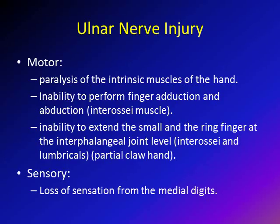Regarding ulnar nerve injury, the ulnar nerve supplies mainly the intrinsic muscles of the hand — the lumbricals and interosseous muscles. Injury to the ulnar nerve causes paralysis of these intrinsic muscles, resulting in inability to abduct and adduct the fingers. The patient cannot spread the fingers and bring them back together. Also, the medial two lumbricals supplied by the ulnar nerve extend the interphalangeal joints of the small and ring fingers, so with ulnar nerve injury the patient cannot extend those joints. Sensory loss comes from the medial digits.